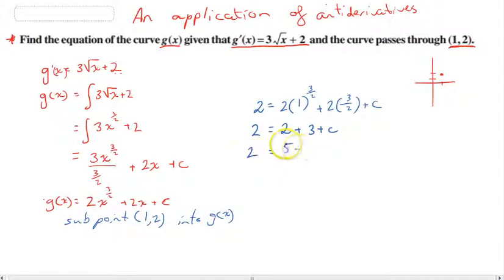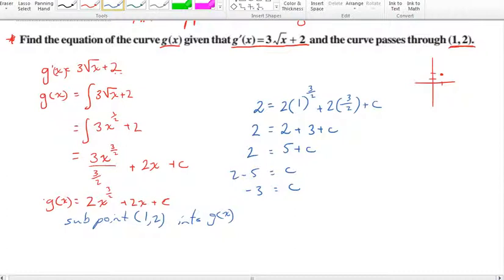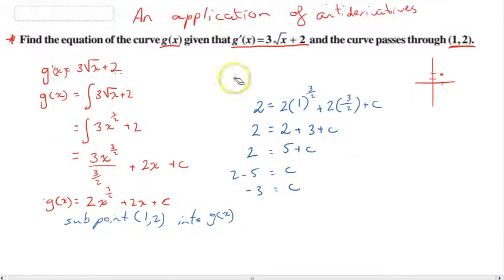So 2 = 5 + c. So c = 2 - 5. So c = -3. Okay, this is what happens when you try to rush things. Whoopsie. Hopefully you guys picked up on that mistake. I was subbing in the point (1, 2). So I subbed in point 2, that's great. I subbed in point 1 there, but then I must have seen this 3/2 and got excited.